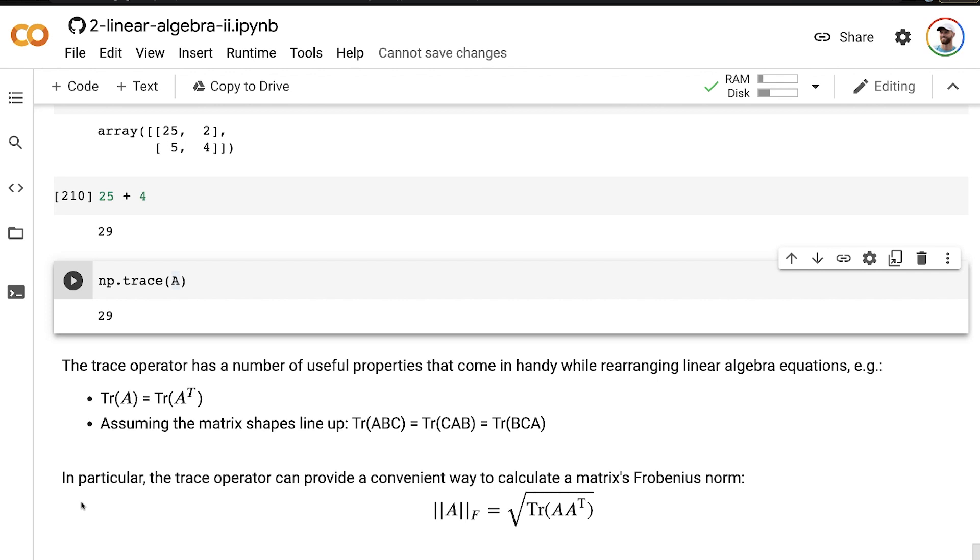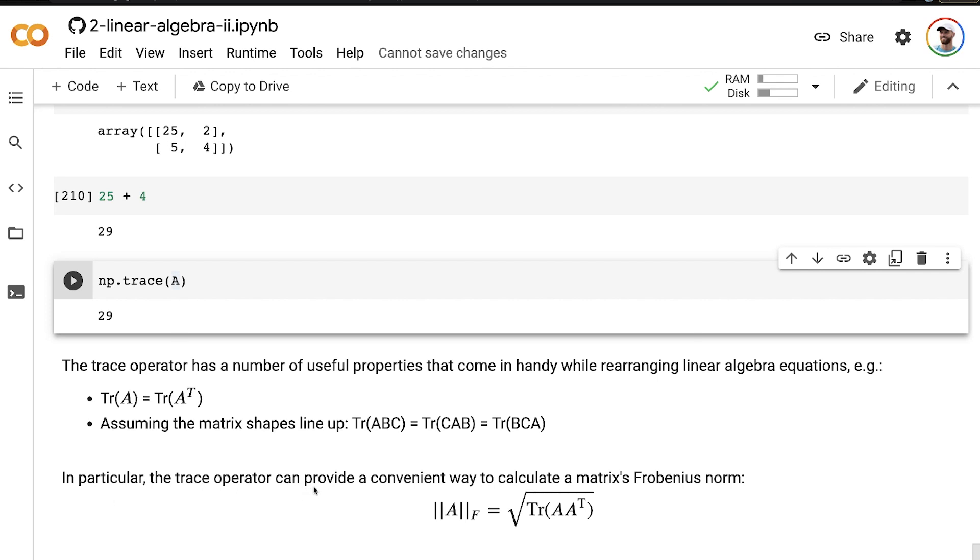In particular, the trace operator can provide a convenient way to calculate a matrix's Frobenius norm. So remember the Frobenius norm from near the end of our intro to linear algebra subject earlier on in this machine learning foundation series. This is the matrix analog of the L2 norm that we use for vectors, and the Frobenius norm can be calculated as the square root of the trace of A, A transpose.